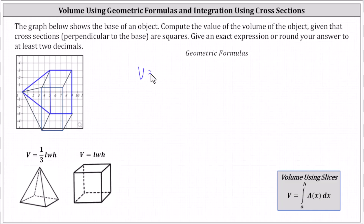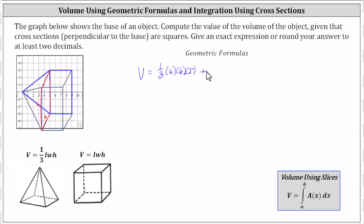The total volume equals, for the pyramid, one third times — notice the base is a six by six square — and the height along the x-axis from x equals zero to x equals five is five units. So the volume of the pyramid is one third times six times six times five, and then plus the volume of the box on the right.